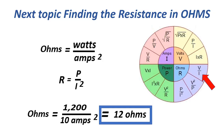The next formula for resistance: ohms equals watts over amps squared, or R equals P over I squared. Equals 1200 over 10 squared — or 100 — equals 12 ohms.